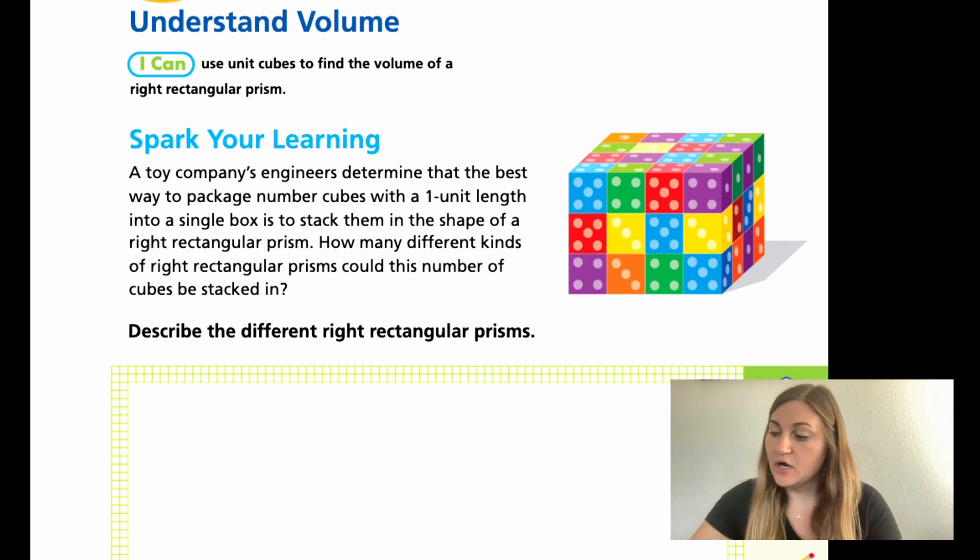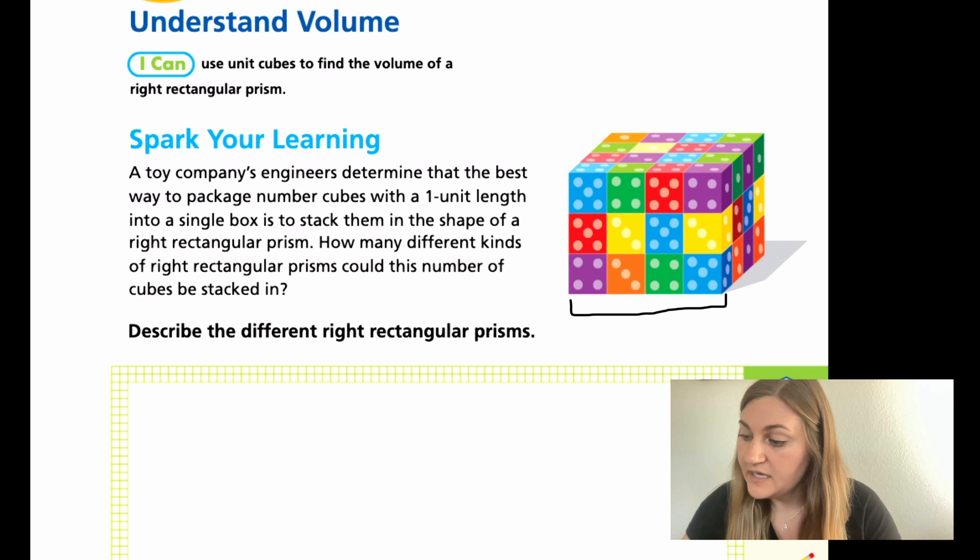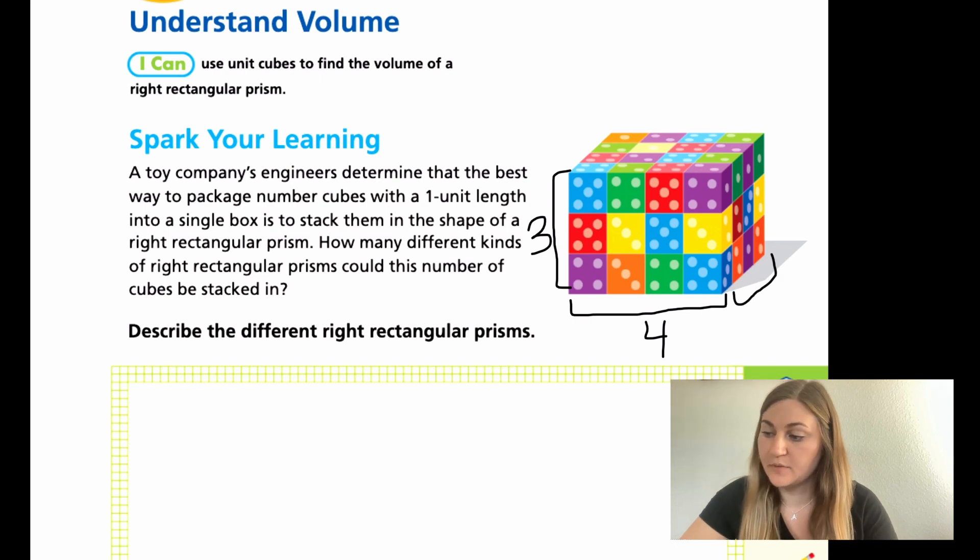Right now we know that the length here is 1, 2, 3, 4. The height here is 3. And then the width, going backwards, you see right here we have a blue and orange, a purple and an orange, so that would also be 4.